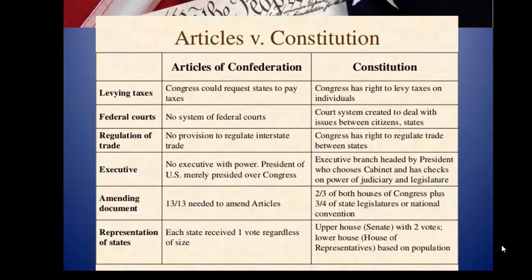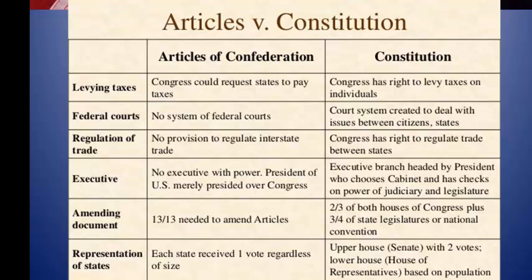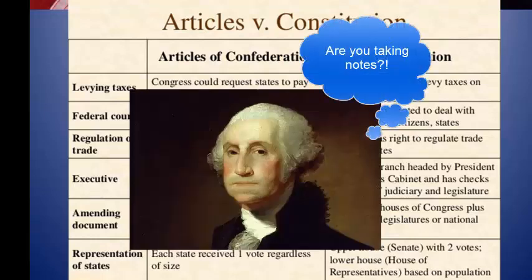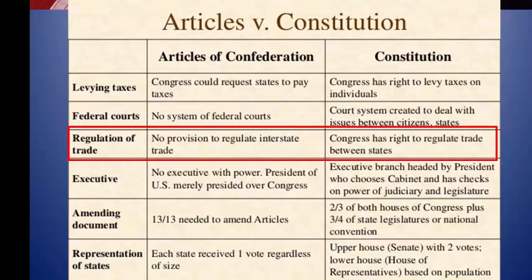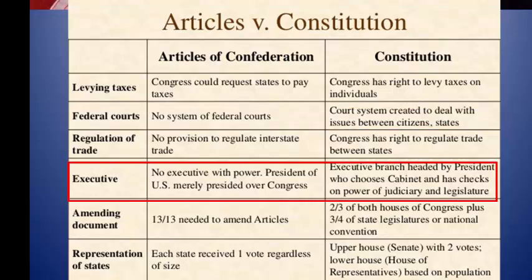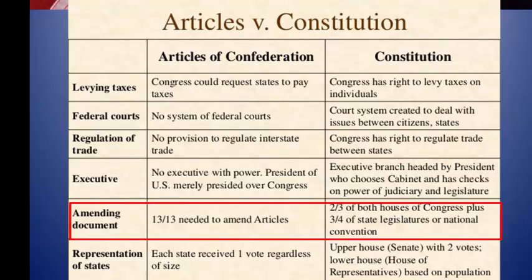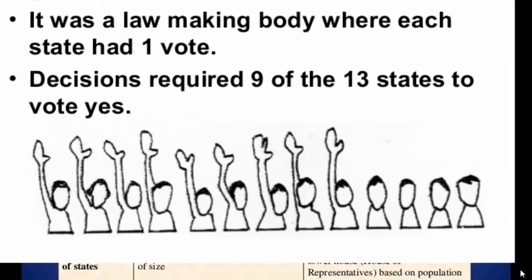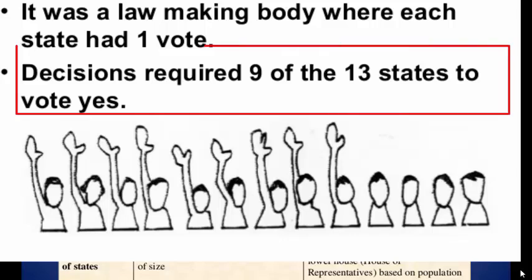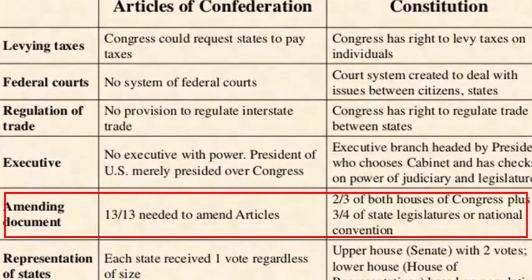Here is a chart to review. Problems of the Articles — no levying taxes: fixed. No federal courts: fixed. No regulation of trade: fixed. No executive: fixed. Too hard to amend or pass laws: now laws only require a simple majority — one more than 50% — to pass, changed from two-thirds. And amendments, which required a unanimous vote, were changed to two-thirds of Congress and three-fourths of the states. Representation — one vote per state — was changed to a two-house Congress with a House of Reps based on population and a Senate with equal representation.